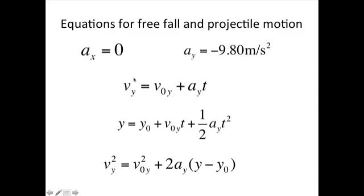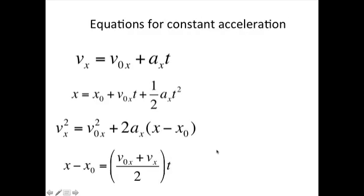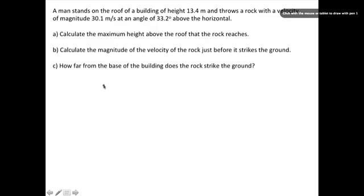Notice that these three equations come right off the page before — those three are these three. So the problem: a man stands on the roof of a building of height 13.4 meters and throws a rock with a velocity of magnitude 30.1 meters per second at an angle of 33.2 degrees above horizontal.